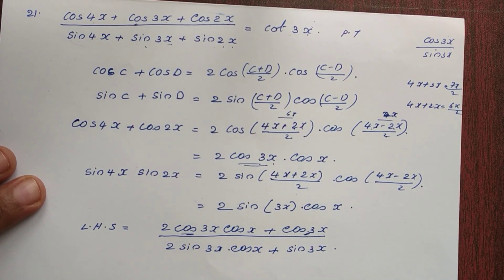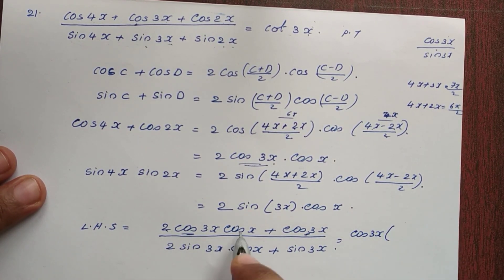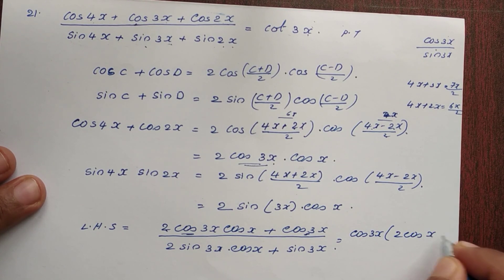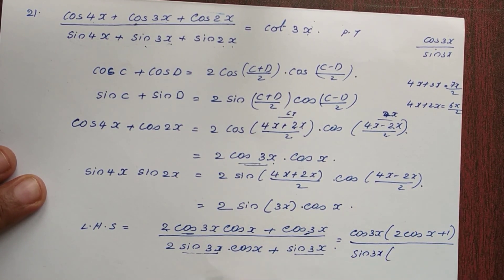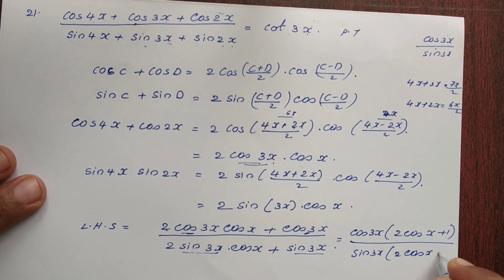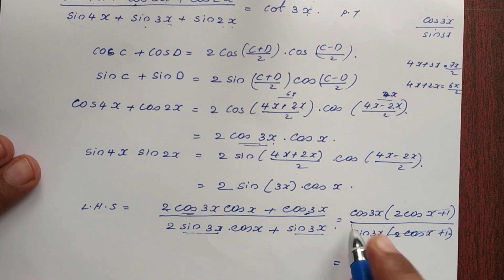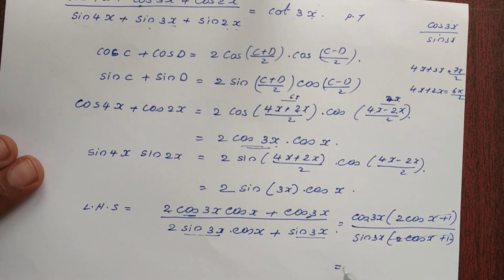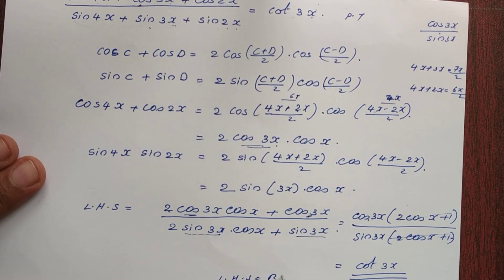So we have the numerator as cos 3x(2 cos x plus 1) and the denominator as sin 3x(2 cos x plus 1). The common factor (2 cos x plus 1) cancels, giving cos 3x divided by sin 3x, which equals cot 3x. So LHS equals RHS.